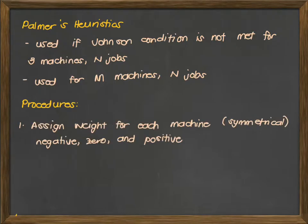We have the following procedures. First is to assign weight for each machine. Take note that the weights should be symmetrical, like a mirror. That is composed of a negative, a zero, and a positive. Now for example, if the machines are odd, you can use negative 2, zero, or positive 2. You can use negative 3, zero, positive 3, negative 1, zero, positive 1, as long as the weight on each side is equal.